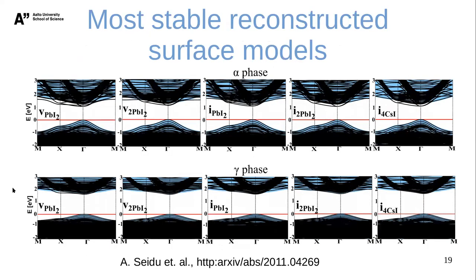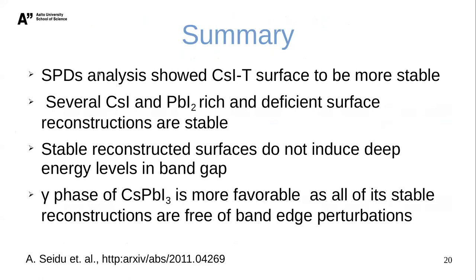We also looked at the band structures of the most stable surfaces. Again, we see surface states within the alpha phase, but no surface states within the gamma phase. In summary, from the surface phase diagram analysis, the cesium iodide-terminated surfaces are the most stable. Surfaces with added cesium iodide and lead iodide are the most stable reconstructed surfaces, because they do not induce polarity within the structure — so there are no deep energy levels induced in the gap. The gamma phase is more favorable as there are no surface states at the band edges and no band edge perturbations.